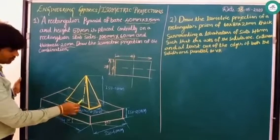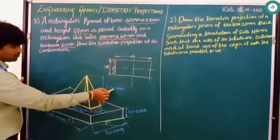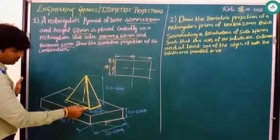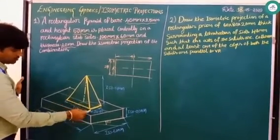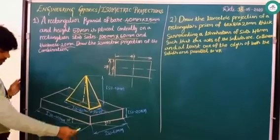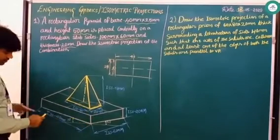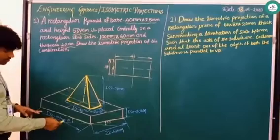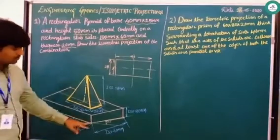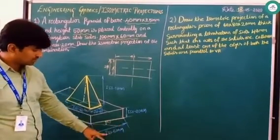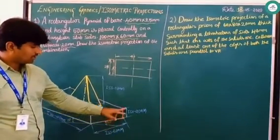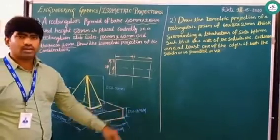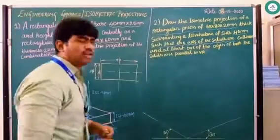After completing this, show the dimensions: the height of the pyramid is ISO 50mm, the pyramid base is ISO 40mm on one side and ISO 25mm on the other. For the rectangular slab, this side is ISO 100mm, this side is ISO 60mm, and the thickness is ISO 20mm.